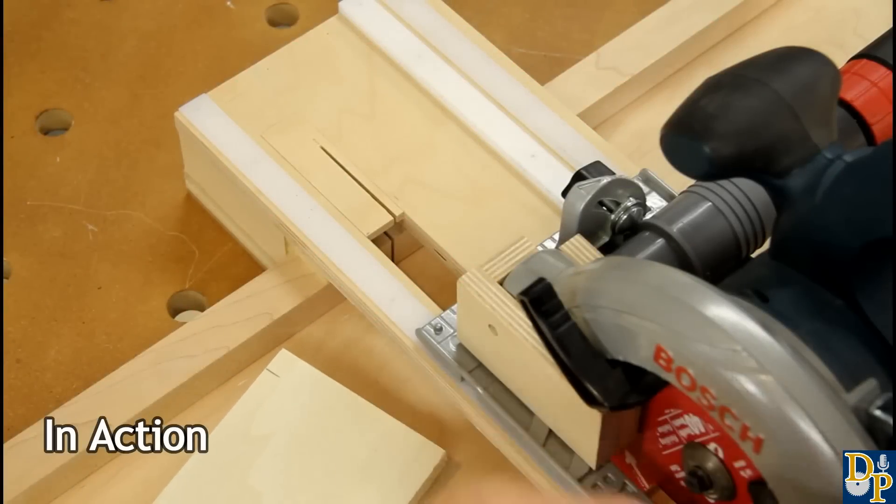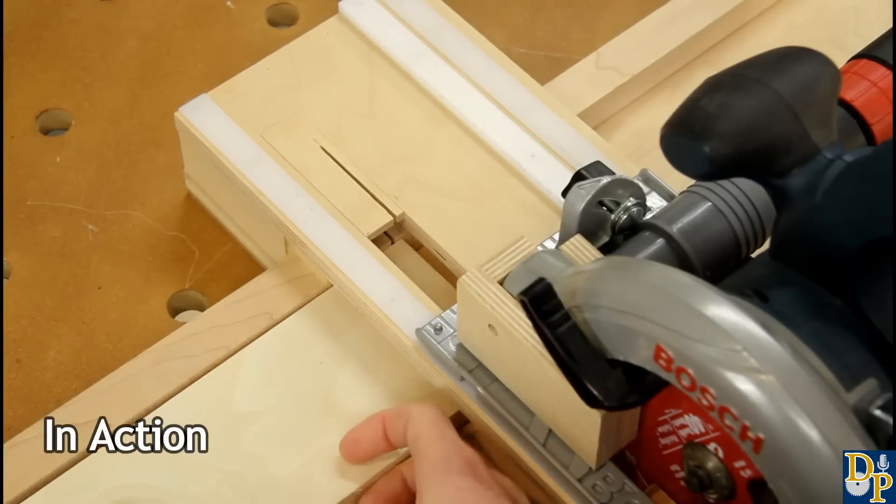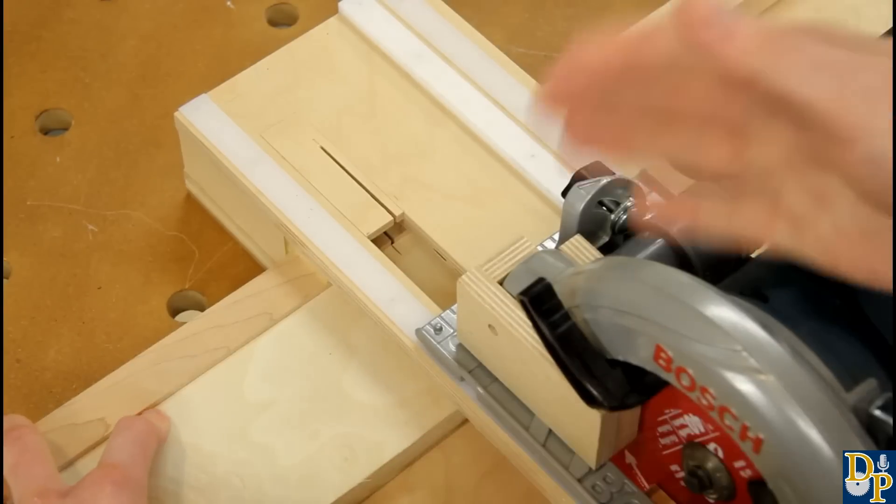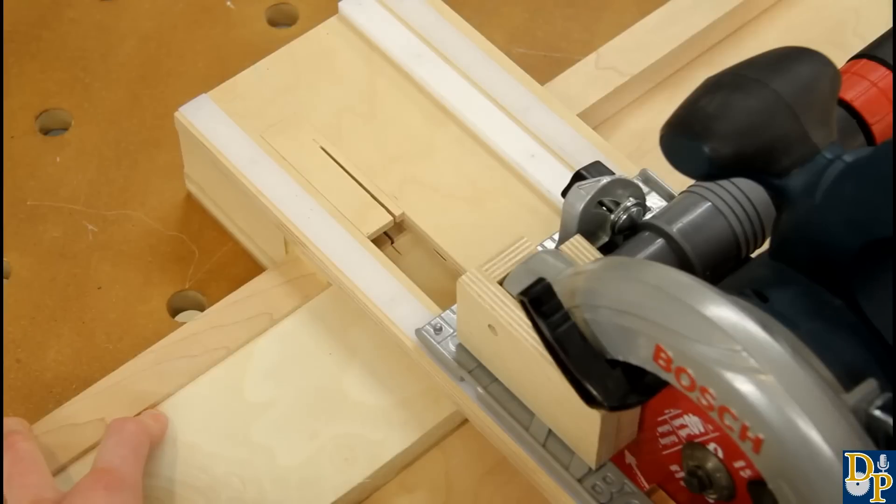So to use the jig you simply take your cut mark that you want, line it up with whichever side of the kerf on the fence you need depending on where you want your waste and make sure the saw is clear of the work, start your dust extraction and make the cut.